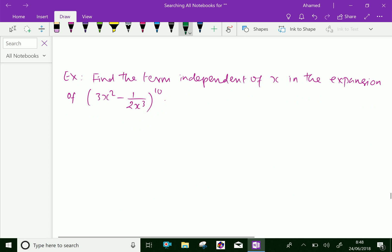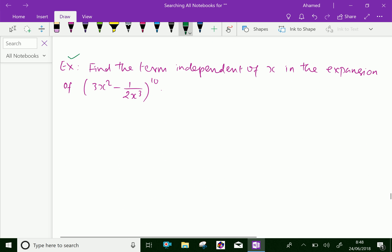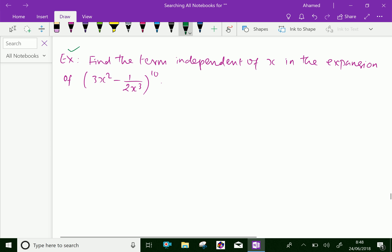Look at this example. Find the term independent of x in the expansion of (3x² - 1/(2x³))^10.